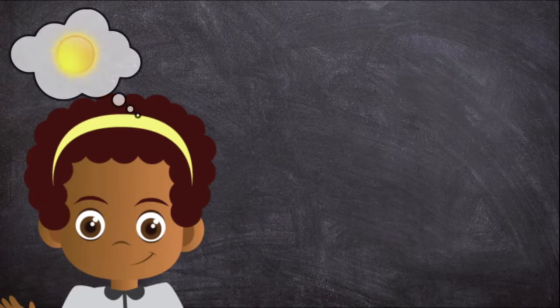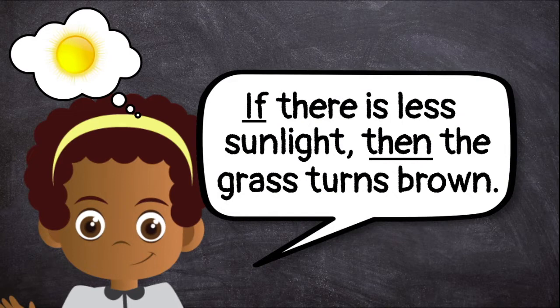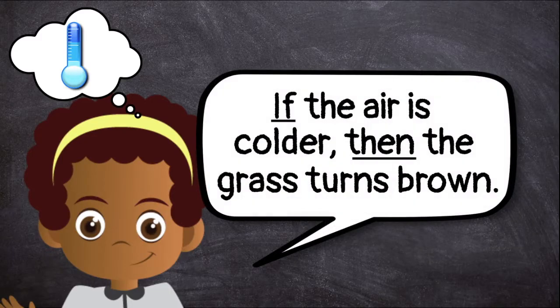For example, your hypothesis might be: if there is less sunlight, then the grass turns brown. Or, if the air is colder, then the grass turns brown.